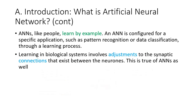Just like humans, an ANN learns by example. It is usually configured for a specific application such as pattern recognition or data classification, and it learns through a learning process. This learning process is similar to a biological system, where neurons make adjustments to the synaptic connections that exist between neurons. This is also true of how ANN learns.